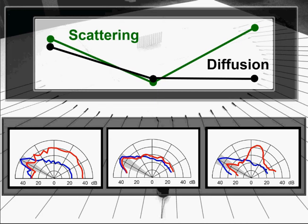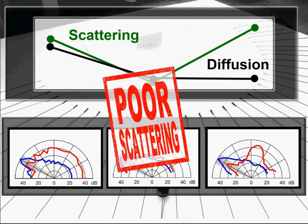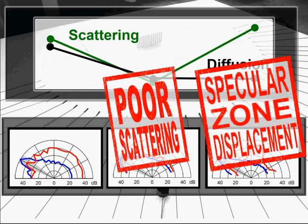The second sample is largely specular. It's a poor diffuser because it displays poor scattering. The third example is an excellent scatterer, but does not distribute evenly the energy that it removes from the specular zone. It is a poor diffuser because it suffers from specular zone redirection.